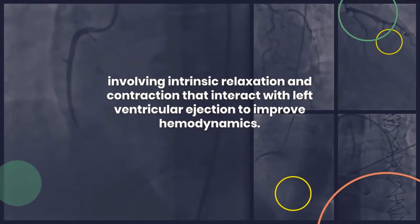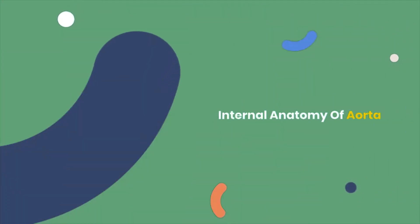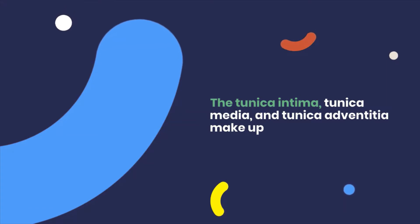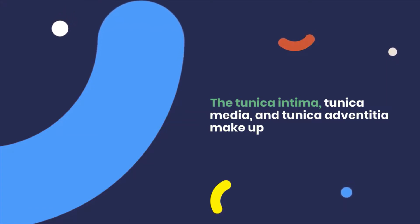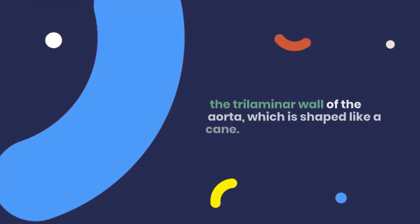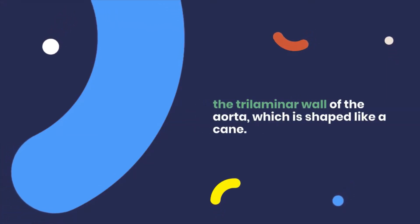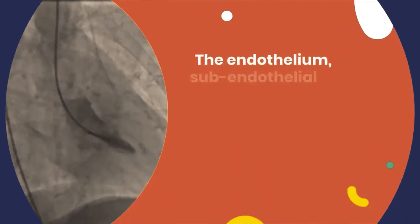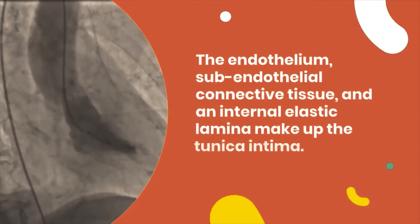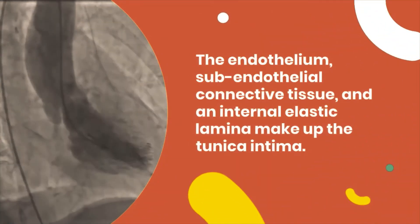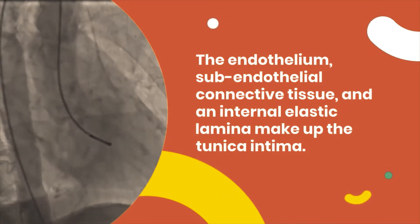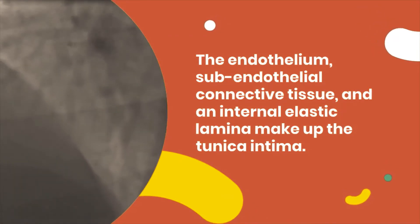Now let's have a look at the internal anatomy of the aorta. The tunica intima, tunica media, and tunica adventitia make up the trilaminar wall of the aorta, which is shaped like a cane. The endothelium, subendothelial connective tissue, and an internal elastic lamina make up the tunica intima.